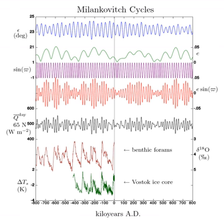This motion means that eventually Polaris will no longer be the North Pole star. It is caused by the tidal forces exerted by the Sun and the Moon on the solid Earth; both contribute roughly equally to this effect.